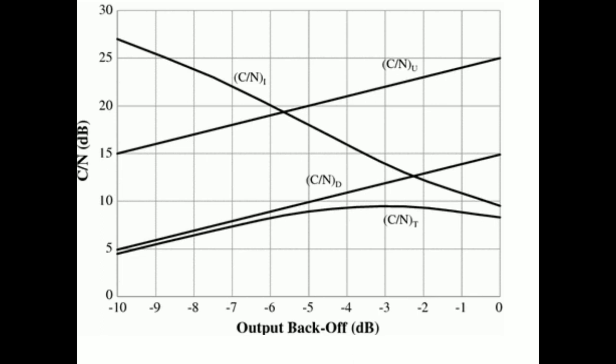However, a larger backoff means less signal power, so the C/N of the uplink and downlink are lower for larger backoff. As backup reduces, intermodulation noise increases so C/N intermodulation curves downward, while C/N uplink and downlink increase as signal power increases. The C/N total plot shows there is an optimum point of operation — around minus 3 dB backoff — where maximum C/N is achieved. This plot is very important for deciding the optimum operating point to get maximum C/N total. Thank you.